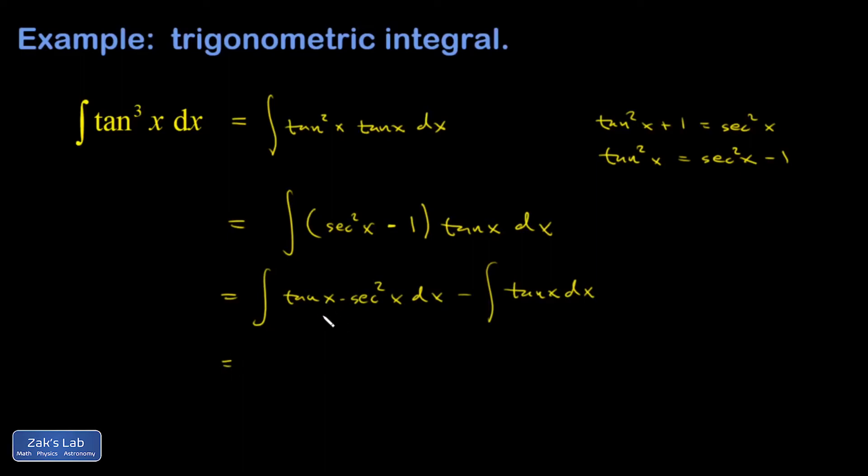That first integral, well, there's a tangent function sitting right next to the derivative of the tangent function. So that takes care of the chain rule. Well, this comes from 1 half tangent squared.